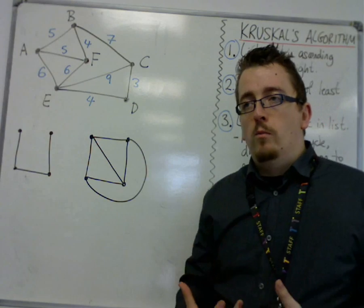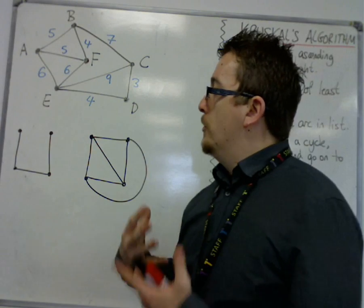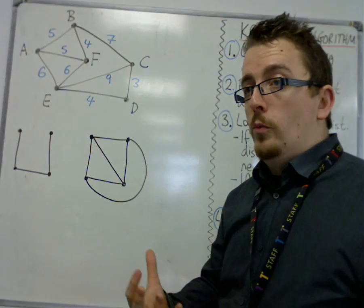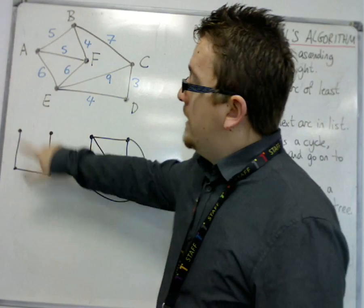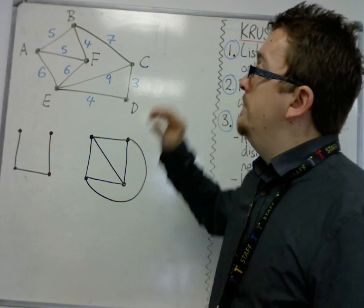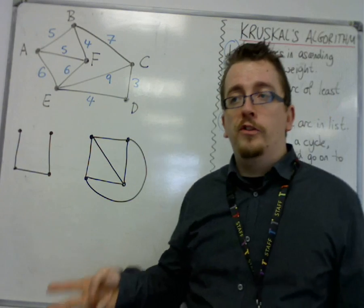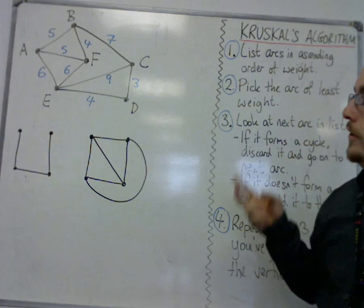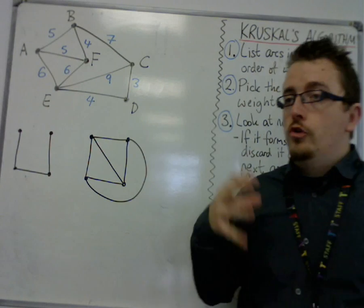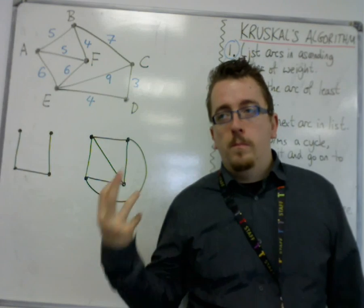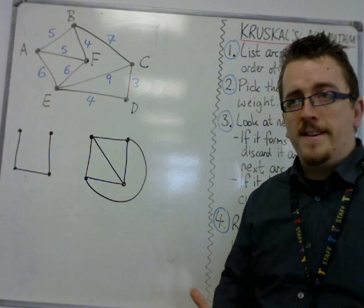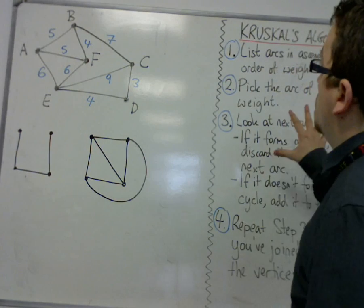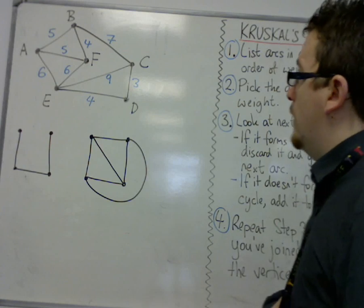And so if we're looking for a minimum one, we're looking at the most, the cheapest way, the least expensive, that will connect the four points. So there are two algorithms that do this. The two algorithms are Kruskal's and Prim's. The first of them that I'm going to consider is Kruskal's algorithm.